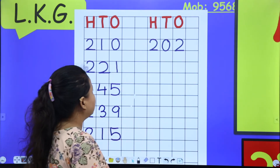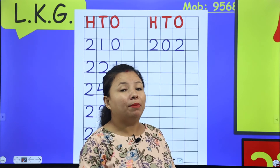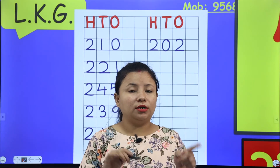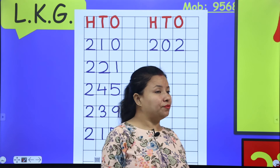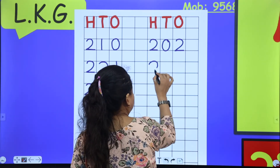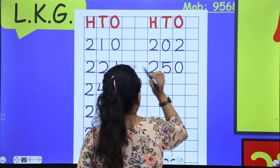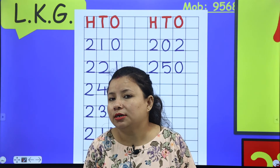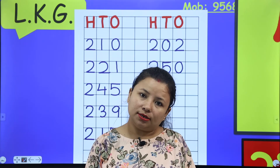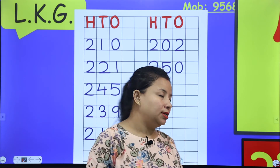The next number is two hundred fifty. Two hundred means two, and fifty means five in the tens and zero — two hundred fifty, 250. Now the next number is two hundred thirty. Two hundred means two, and thirty means three and zero — two hundred thirty, 230.